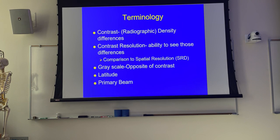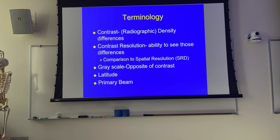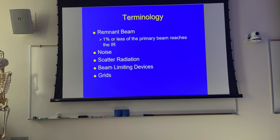Primary beam versus remnant beam: we have a tendency to think of the primary beam as the beam of radiation that strikes the image receptor, but that's not correct. Our primary beam is what is before the patient, as opposed to what goes through the patient, which strikes the image receptor and is what we call the remnant beam. You should never be in the primary beam. Your radiation dose should always come from a portion of the remnant beam — specifically the scattered radiation, not the unattenuated portion. The remnant beam represents about 1% or less of the primary beam.